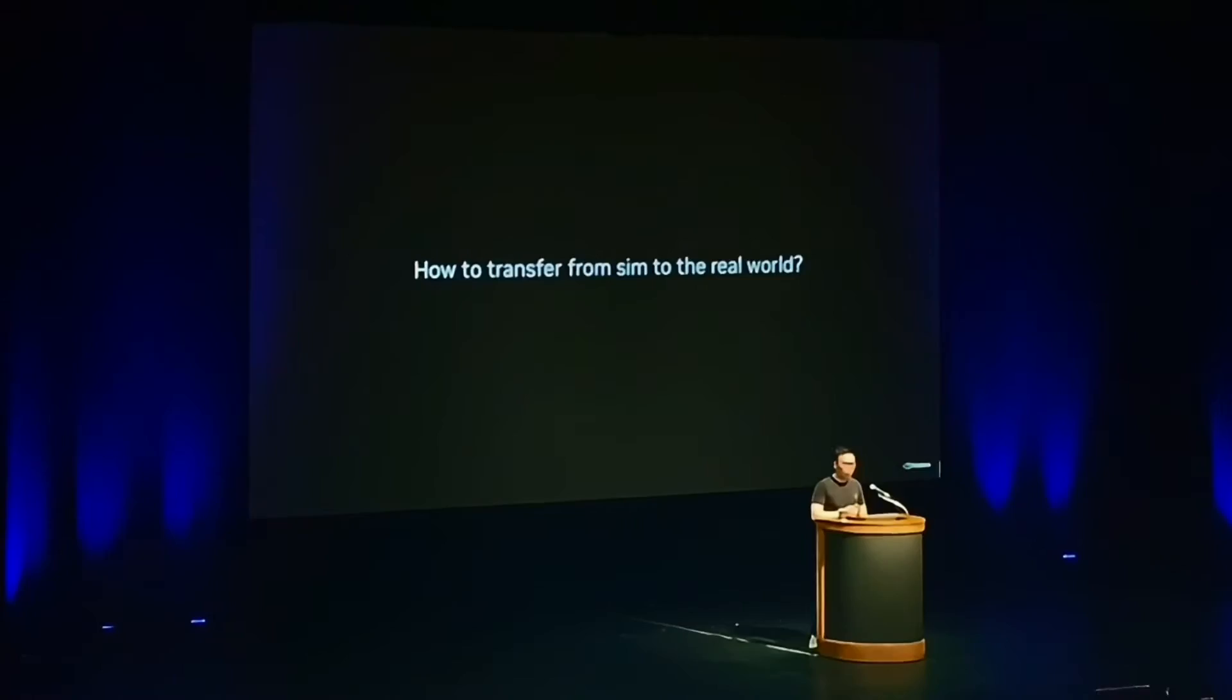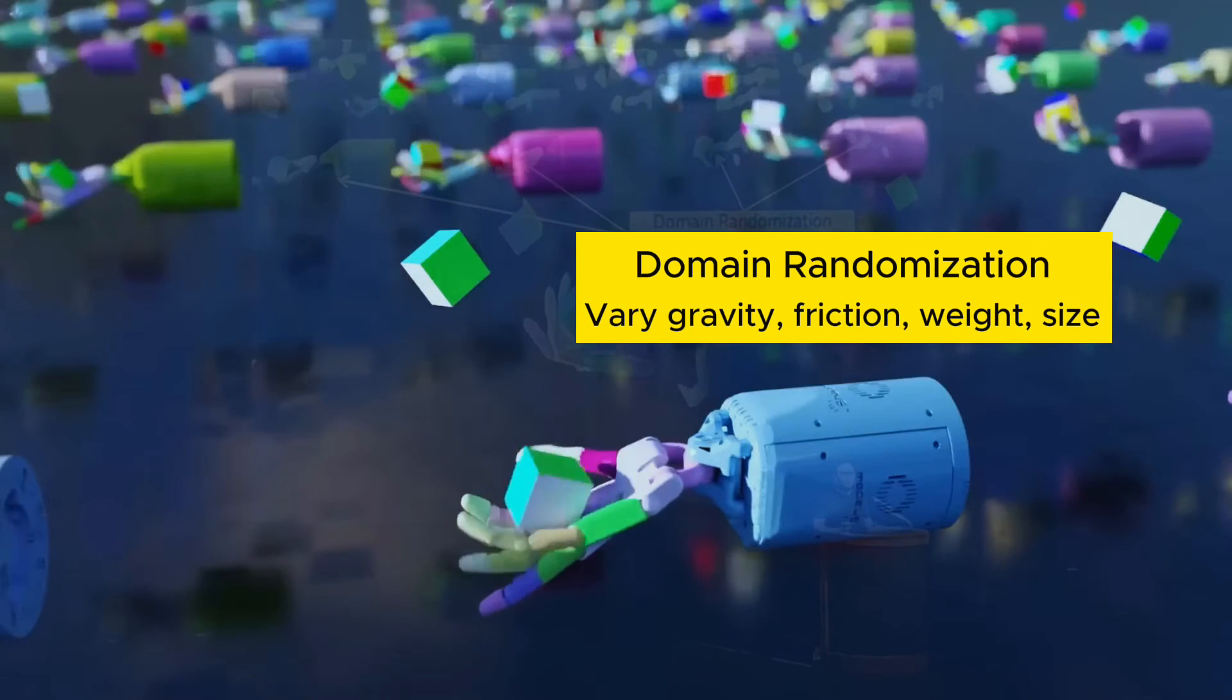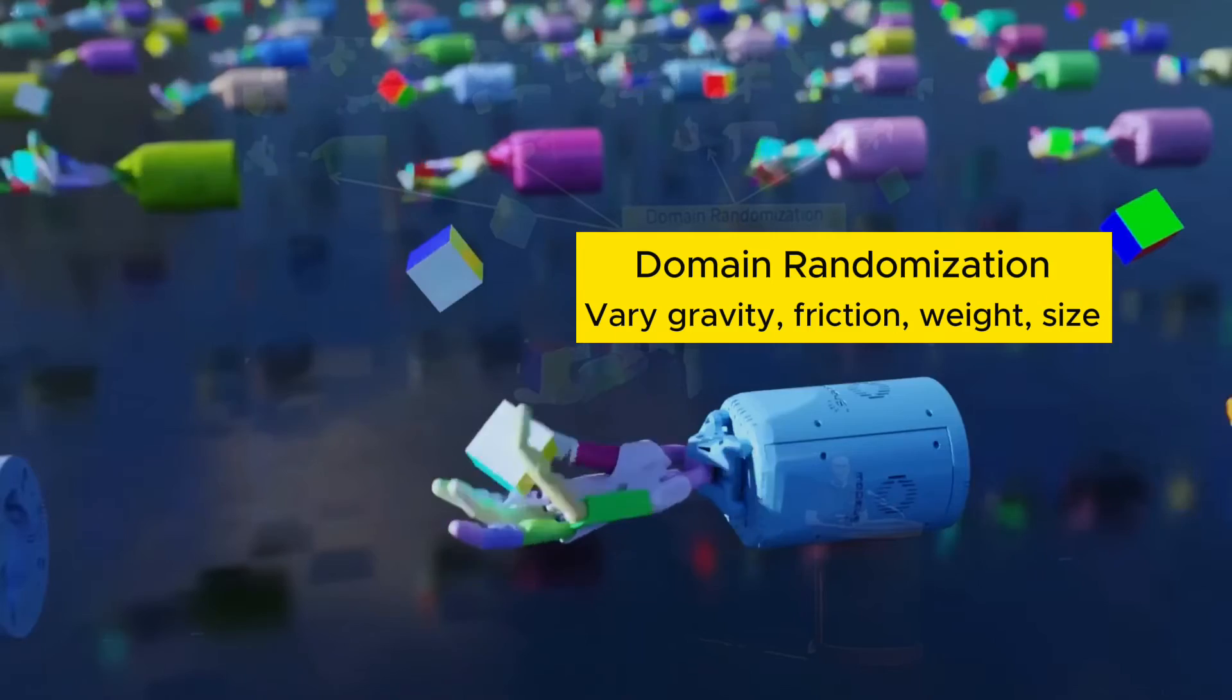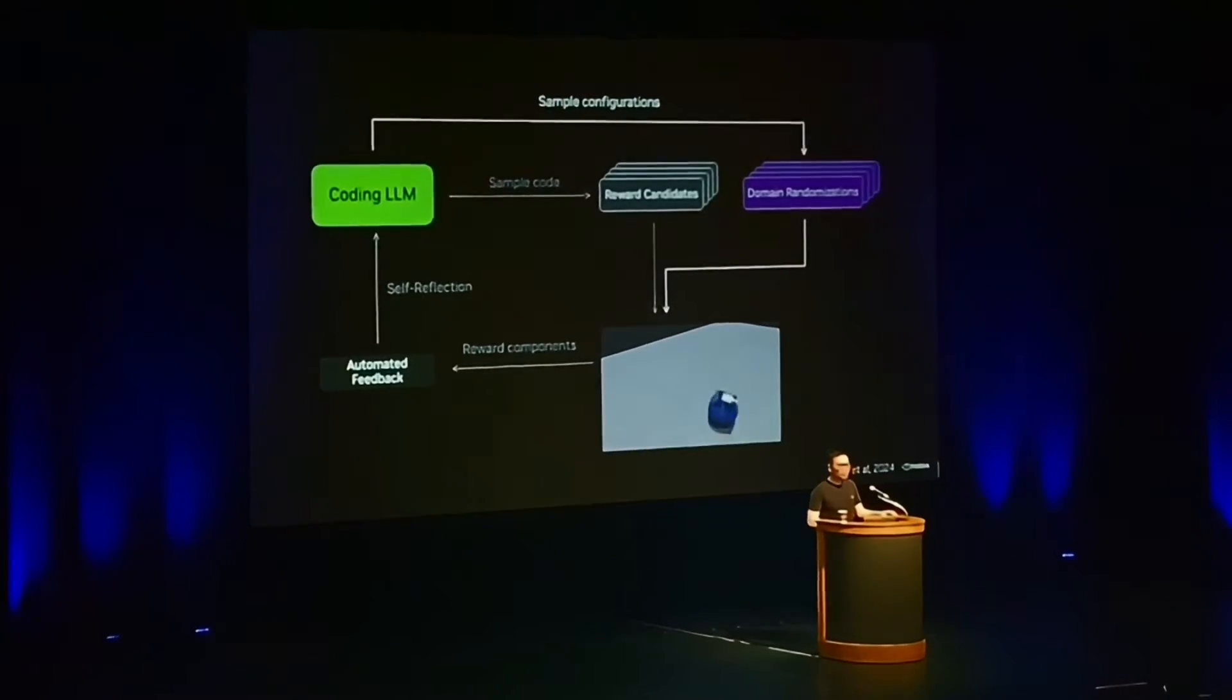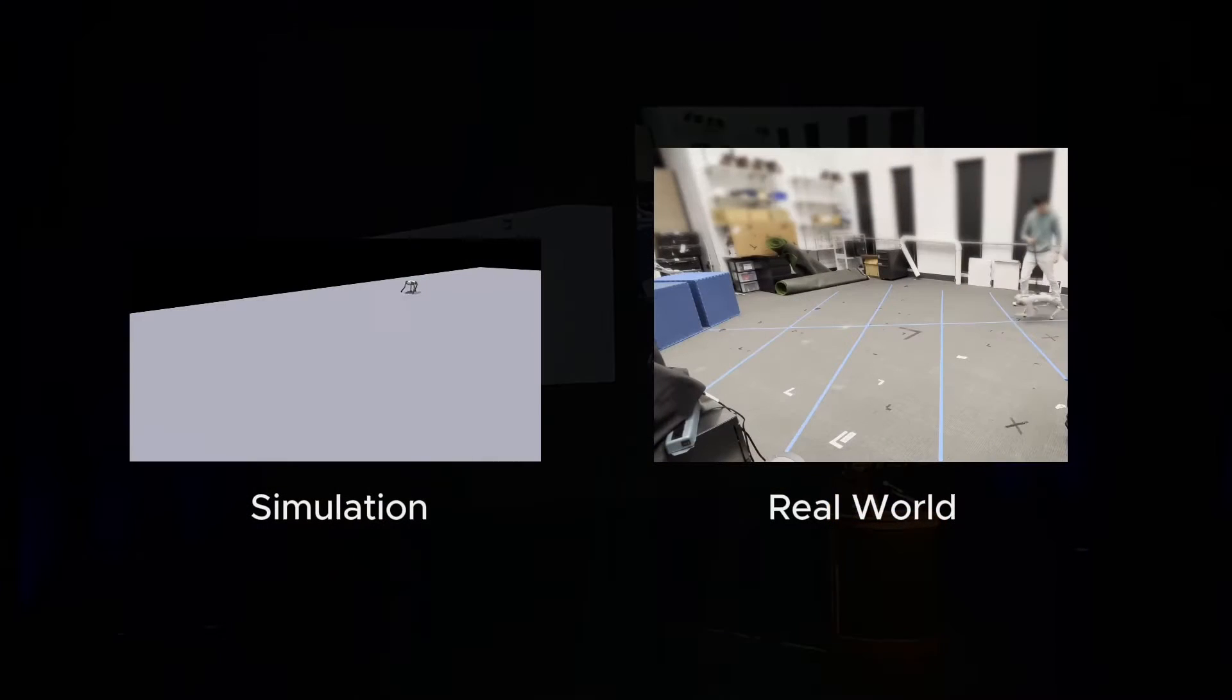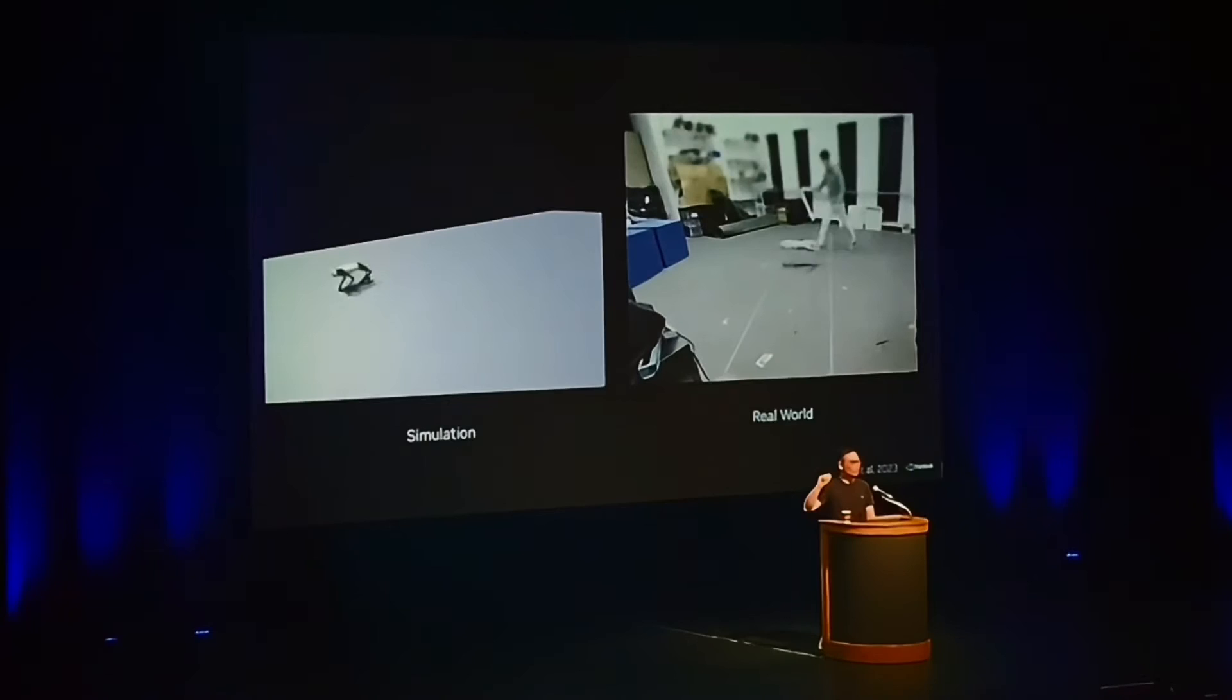The next question is, how do we transfer from the sim to the real world? Here, there's an idea called domain randomization, which is basically the idea that if you train in 10,000 different simulations with different gravity, friction, object weights and size, it may very well just generalize to our real world. We simply ask GPT-4 to also sample the domain randomization configurations. So here on the left-hand side, it's a simulation of the robot dog running forward. We're able to zero-shot transfer to the real world. That's a real robot dog also running forward.